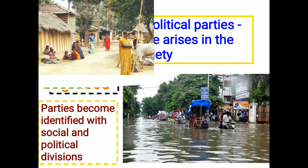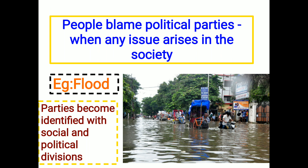For example, when a flood occurs and an area gets submerged under water, those people who are less educated and don't know anything about the constitution will start blaming the political parties. They blame the party members and the leaders for not taking any measures to help the people or the area recover. So people start blaming political parties, and at this point, parties have become identified with social and political divisions.